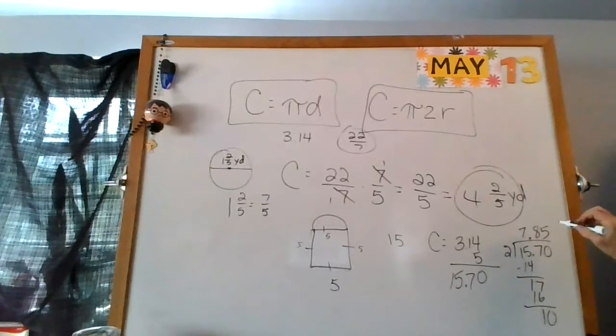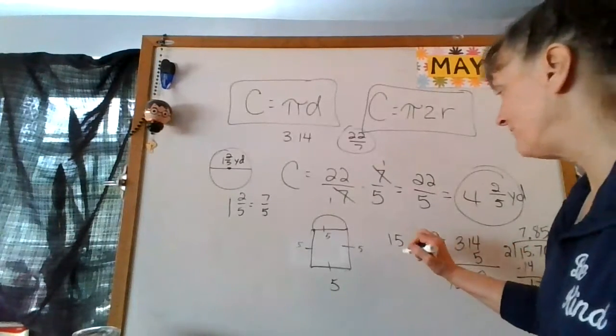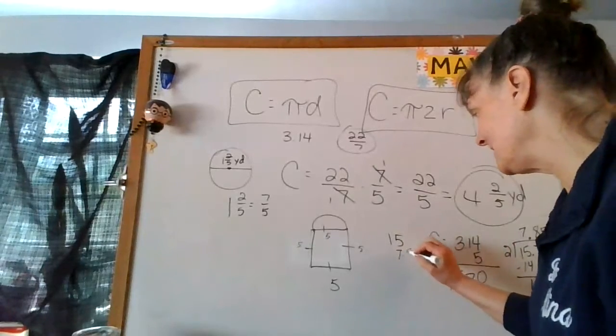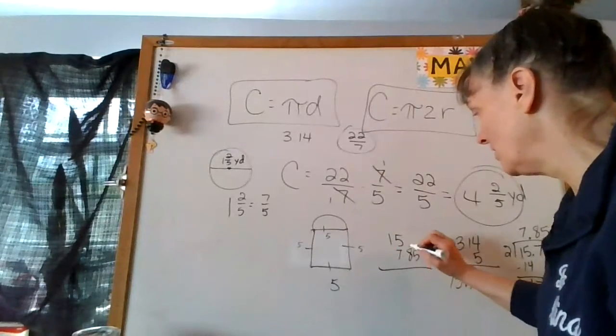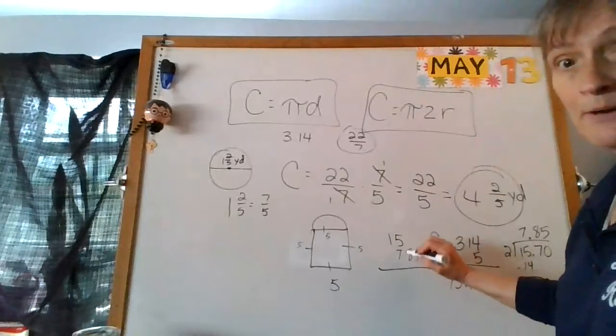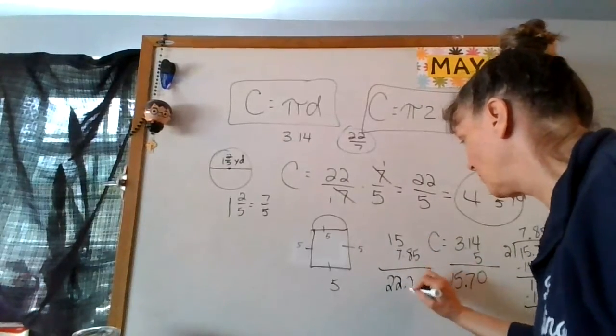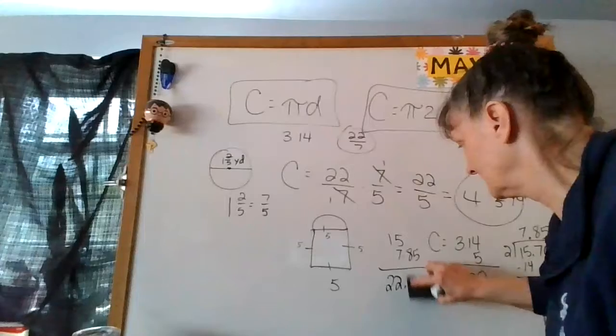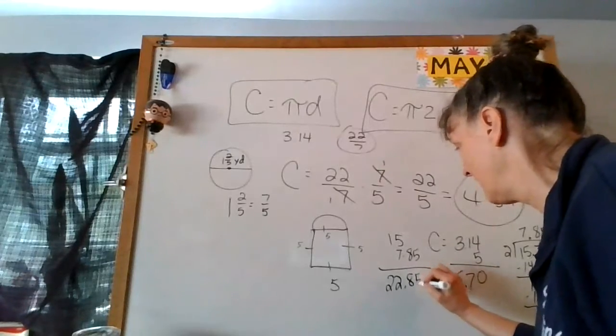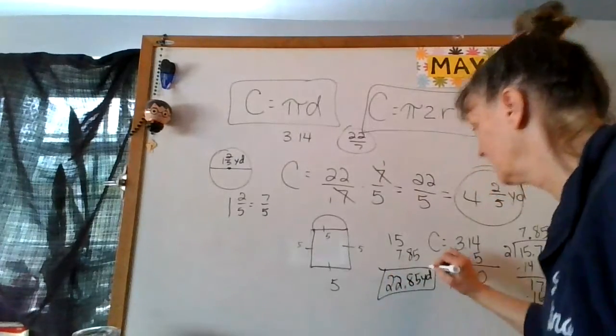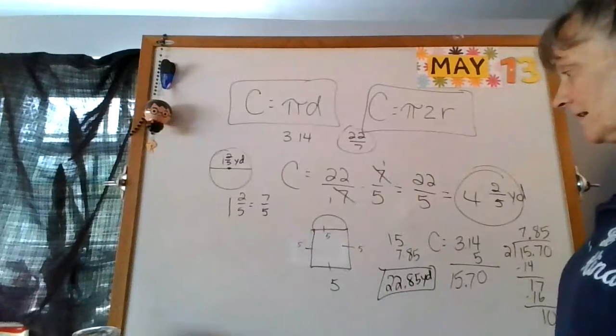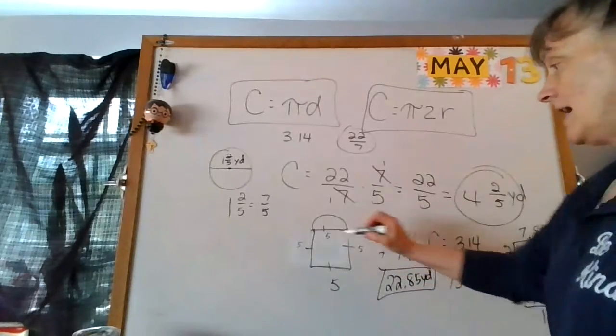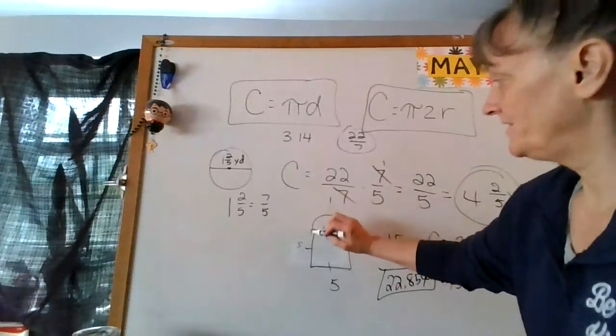So I had 15 and 7.85. Do you see how I line them up? I get 22.85 yards, and that's what I'm going to go with. I added this and then I added this once I found out what that half circle was.